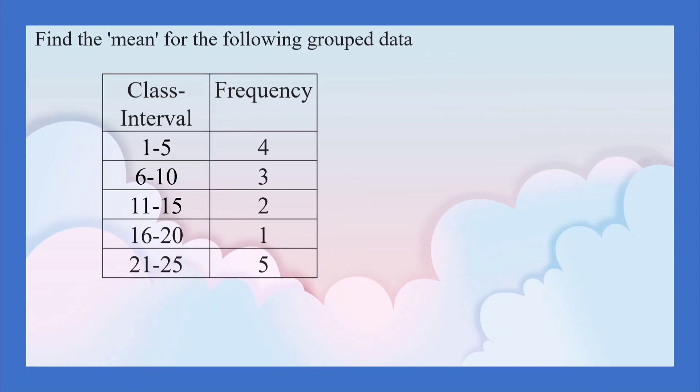Find the mean for the following grouped data. You know that mean is equal to sigma f x by n. Here n is equal to sigma f. If you add all the frequencies you will get n. 4 plus 3, 7, 7 plus 3, 10, 10 plus 5, 15. So n is equal to 15.